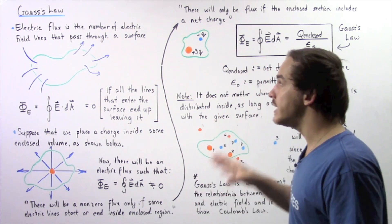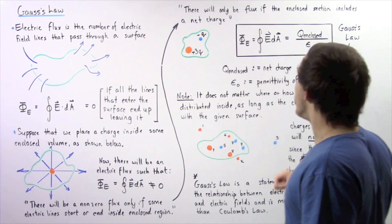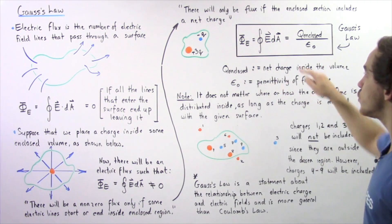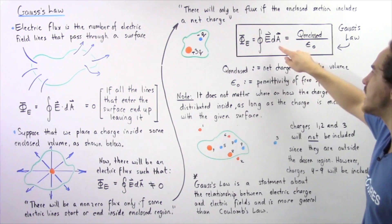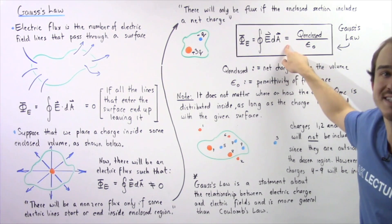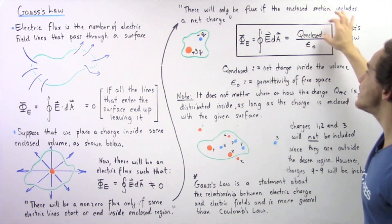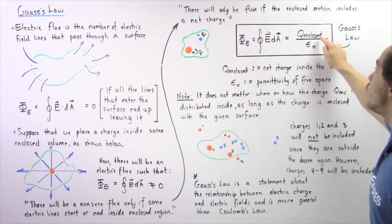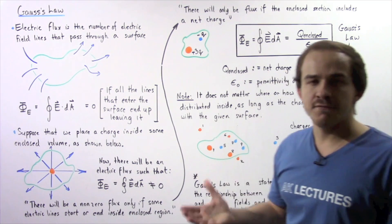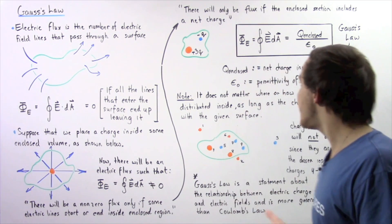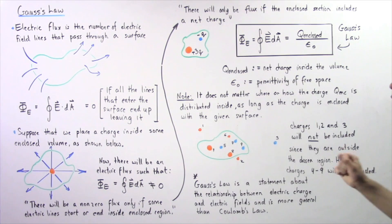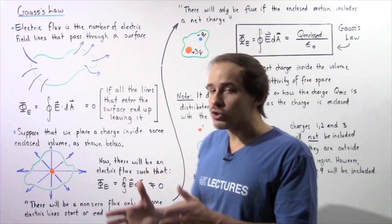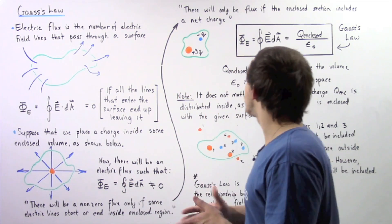This leads us directly into Gauss's Law, which states that our electric flux equals the closed integral of E multiplied by dA, and this equals the total charge enclosed in our chosen region divided by epsilon naught, the permittivity of free space. This is our relationship between electric charges and electric fields.